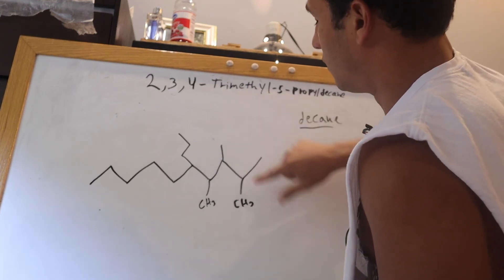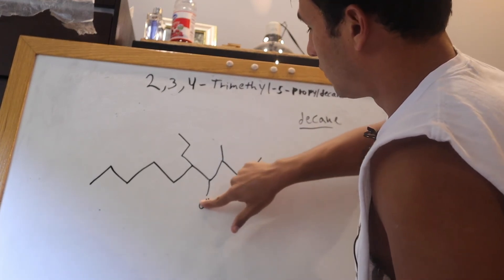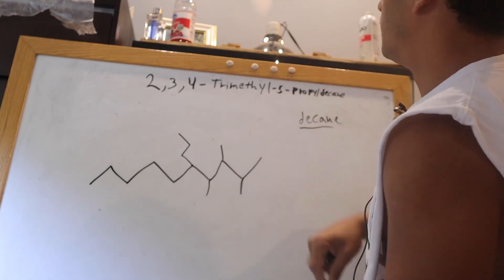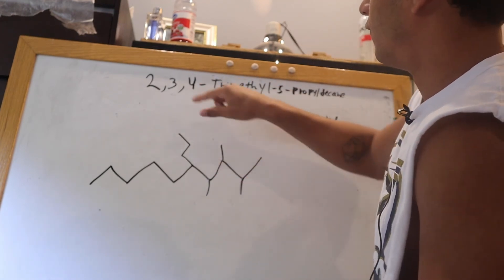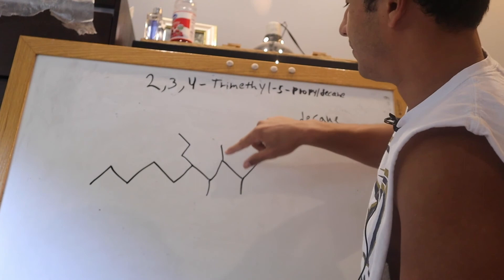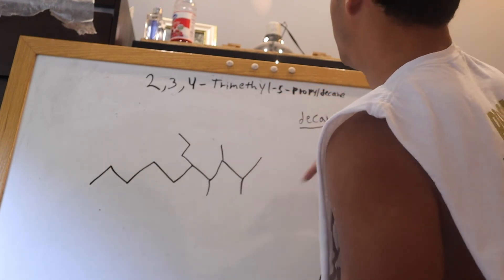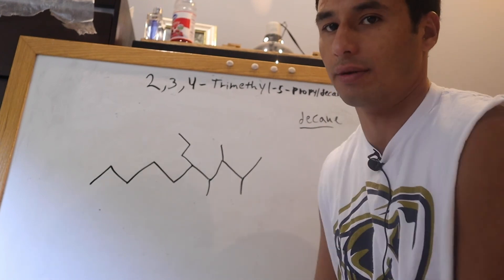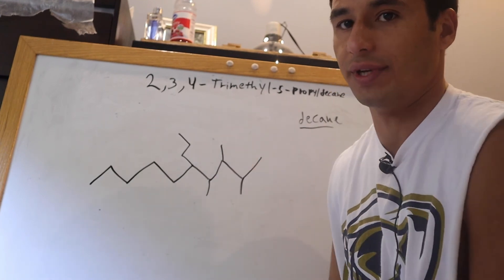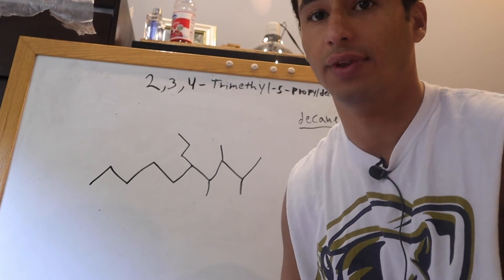So essentially it's going to look like this. You have 2, 3, 4 trimethyl, 5 fifth carbon, propyl group, and the whole thing is a decane. 10 carbons and single bonds between all of them. So that's how you do that one.